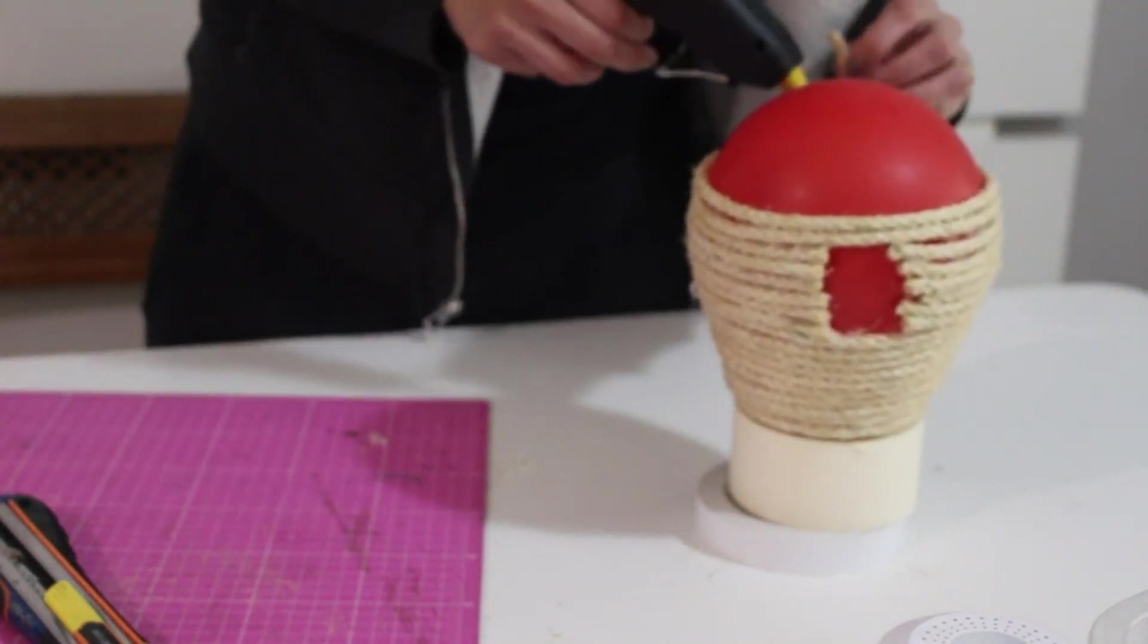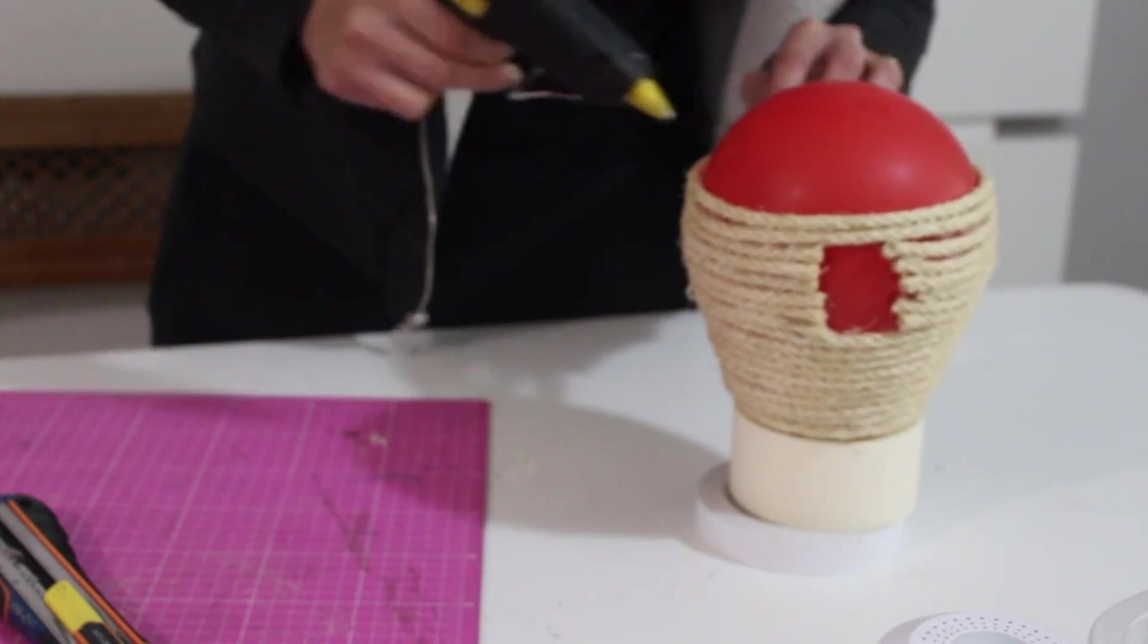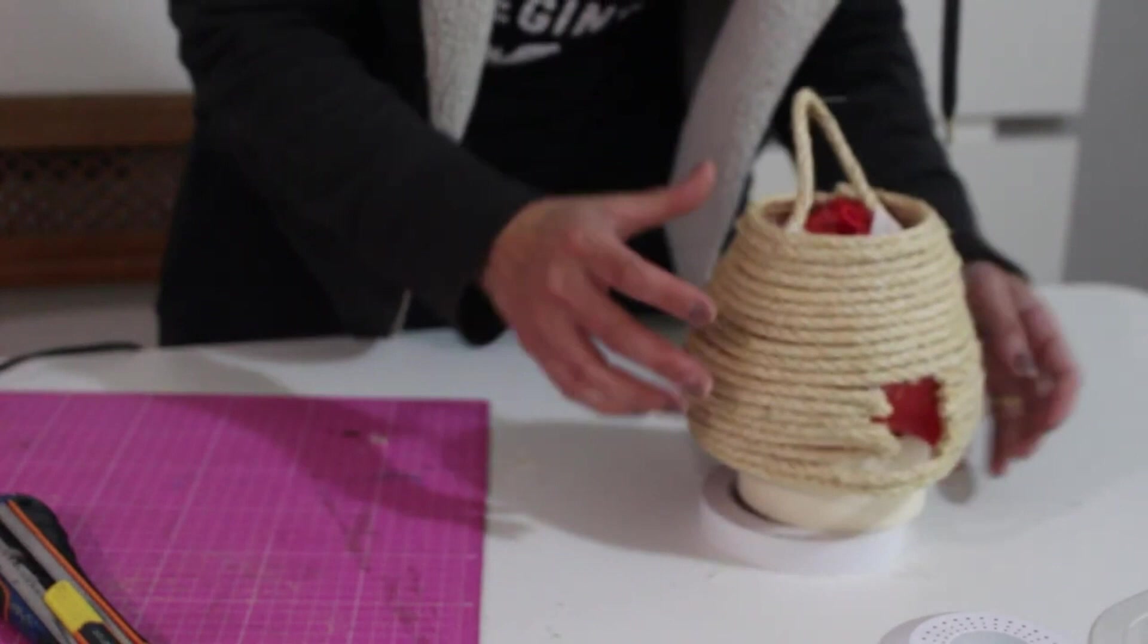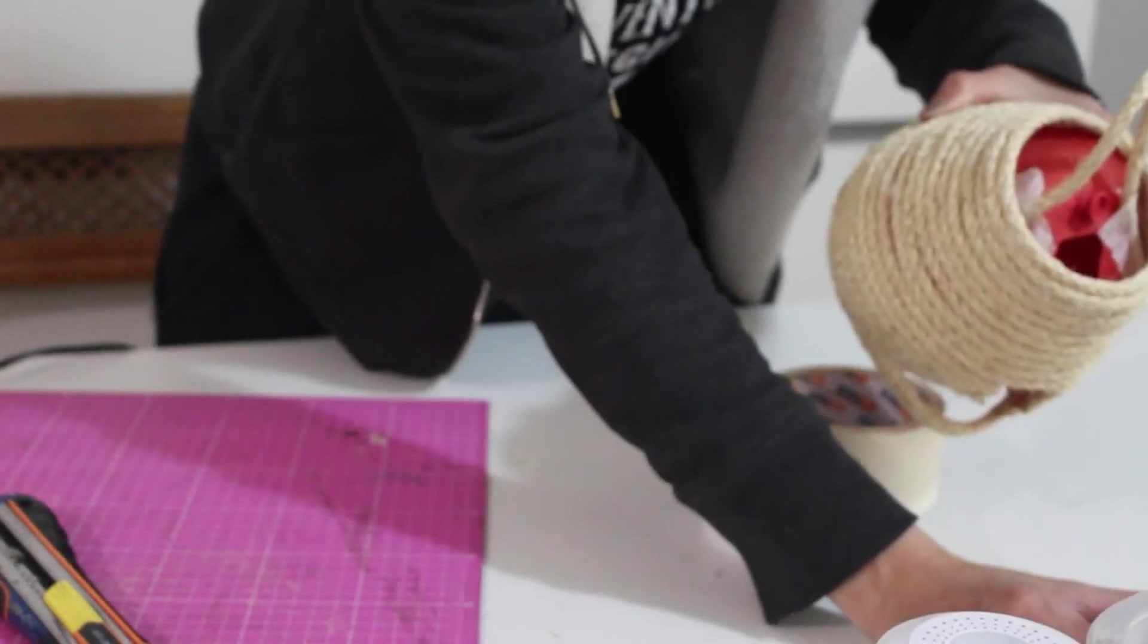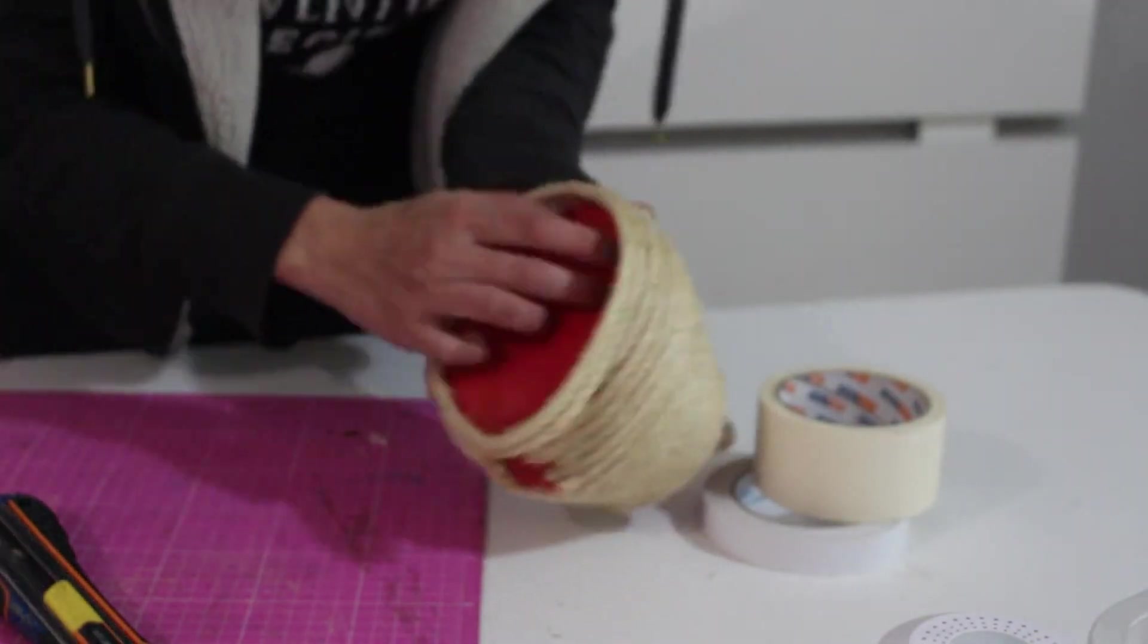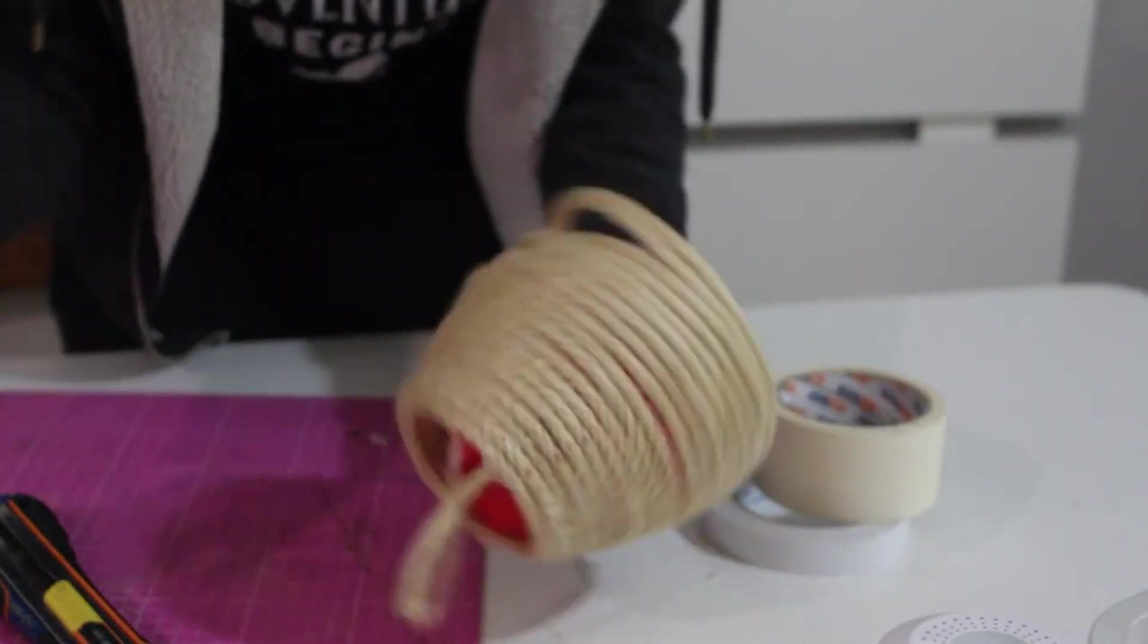Continuing here, using the same twine string I glue on a circle of twine string the same size as our circle marking, and that is where we're gonna add on our ribbon. After you've stuck on all the twine string, I'm gonna glue on this circle.